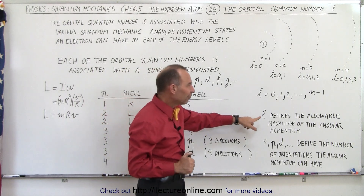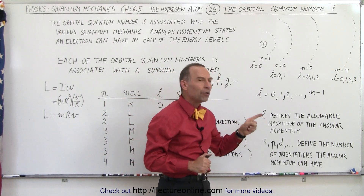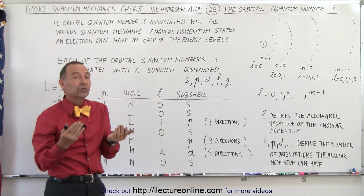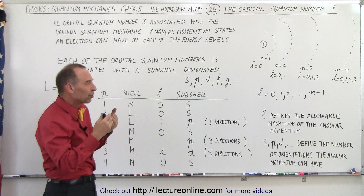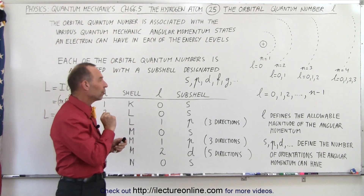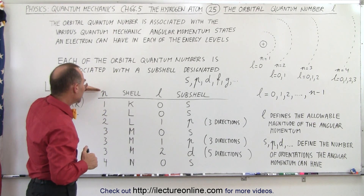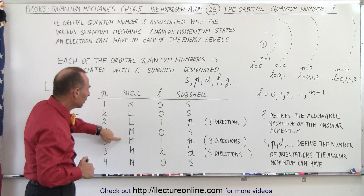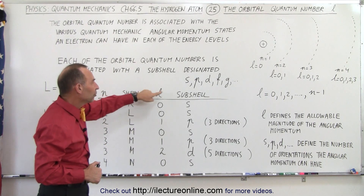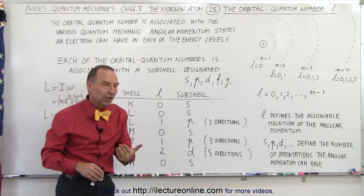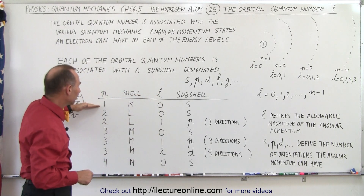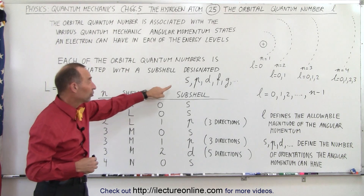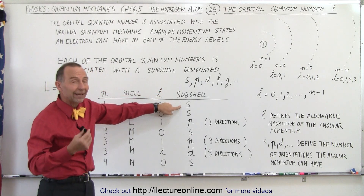l defines the allowable magnitude of the angular momentum. The angular momentum can have a certain magnitude and it can have directions. Also think about it this way: if the principal quantum number is associated with a shell, the orbital quantum number is associated with a sub-shell. So for the first energy level, in shell K, l can only be 0, and l equal to 0 is associated with a sub-shell called s.